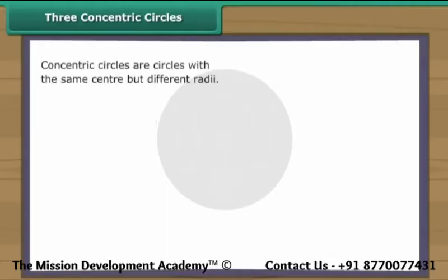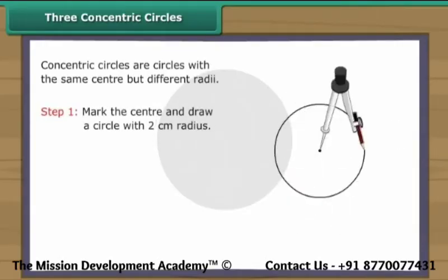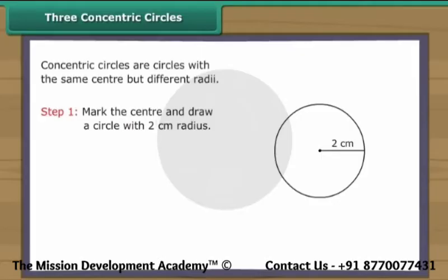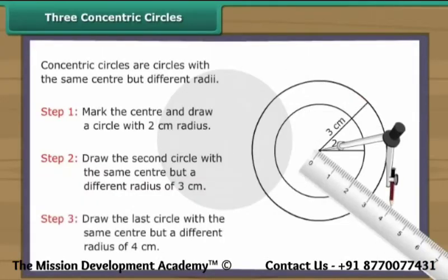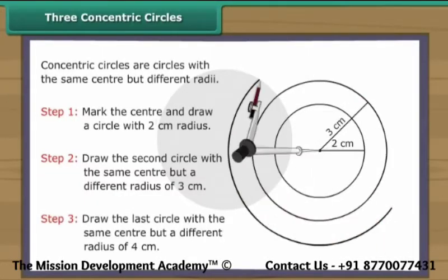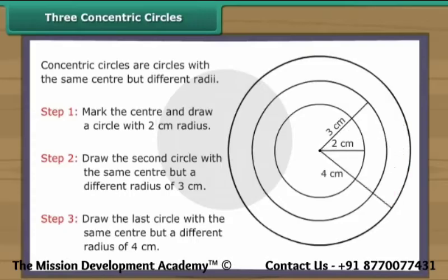Three concentric circles. Concentric circles are circles with the same center but different radii. Let us now draw three concentric circles with the radii 2, 3, and 4. Mark the center and draw a circle with two centimeters radius. Draw the second circle with the same center but a different radius of three centimeters. Draw the last circle again with the same center but a different radius of four centimeters. We have three concentric circles.